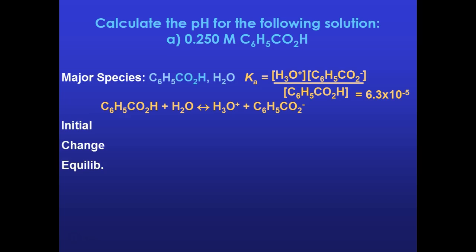So when I set up my ICE chart, the only concentration I have to begin with is the 0.250 molar. I don't have any of the H3O+ or any of the C6H5CO2-, so the left side needs to decrease and the right sides need to increase. Again, I'm allowed to assume that that X for the C6H5CO2H is negligible, and that the other two went up by X. And if I substitute those into my K expression, I can find the amount of hydrogen that's actually generated from this weak acid, 0.0040.